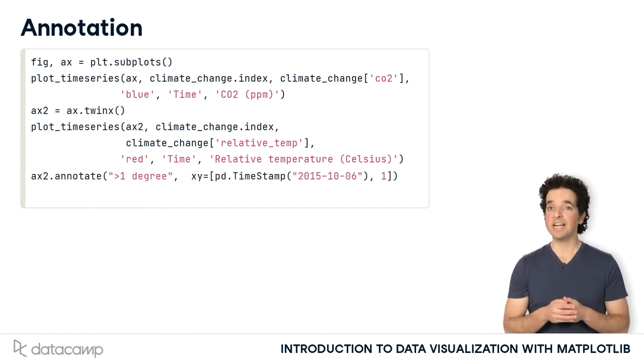Next, we call a method of the axes object called annotate. At the very least, this function takes the annotation text as input, in this case the string larger than 1 degree, and the xy coordinate that we would like to annotate.